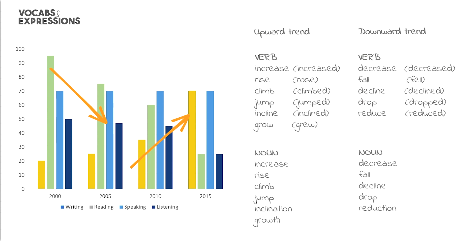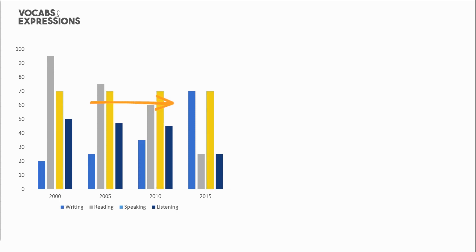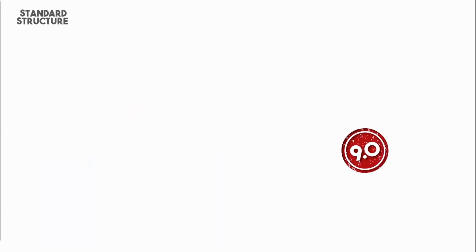For a downward trend, the verbs include: decrease, decreased; fall, fell; decline, declined; drop, dropped; reduce, reduced. For nouns: decrease, fall, decline, drop, reduction. And if the graph has a flat trend, we use these expressions in both past and present form: level off, leveled off; remain stable or steady, remained stable or steady; stay constant, stayed constant; maintain the same level, maintained the same level.